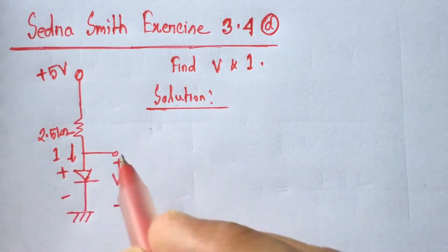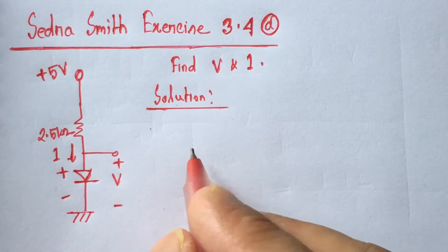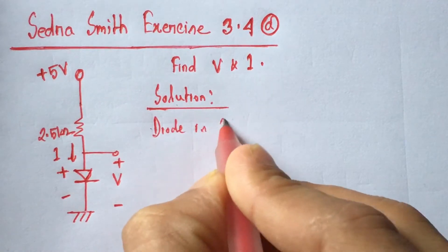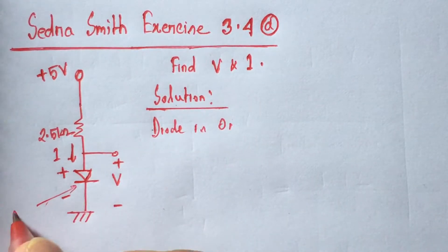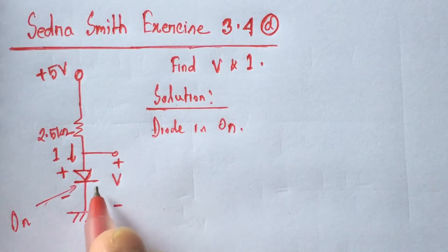Plus 5 volts is applied across the diode, so the diode is forward biased and will be on. Since the diode is on and this is an ideal diode with no voltage drop,